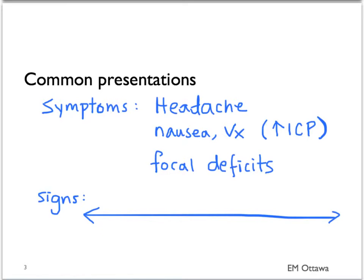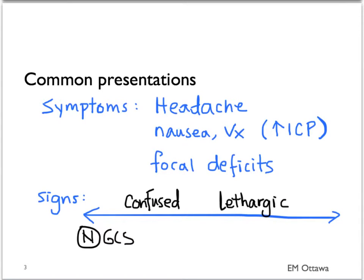There is a range of presentation. The patient can be completely neurologically normal with a normal GCS, to being slightly confused, lethargic, or unresponsive. They can also present with seizure activities.